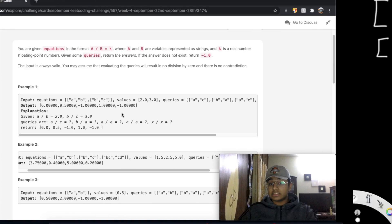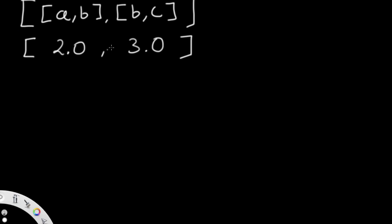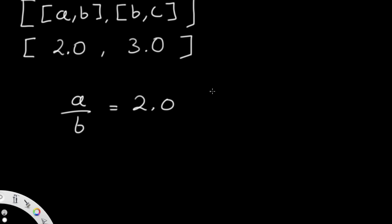Let's look at the first example. We have a comma b and b comma c, which means a divided by b equals 2.0. From this we can also deduce the reciprocal: if a by b equals 2.0, then b by a equals 1 divided by 2.0, which is 0.5. So we have both of these conditions that we can account for.